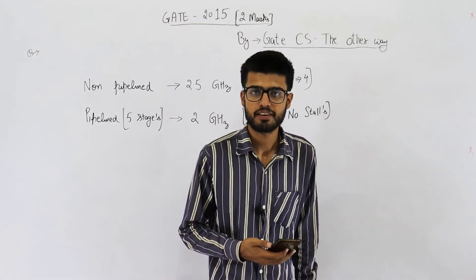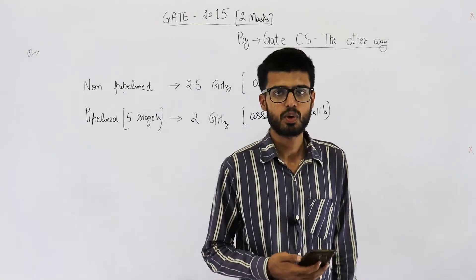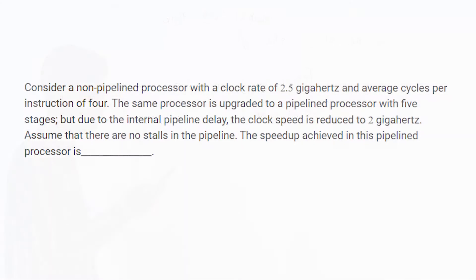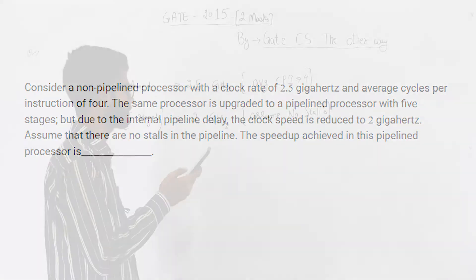This question was asked in GATE 2015 exam, set 1. Let's read out the statement. Consider a non-pipelined processor with a clock rate of 2.5 GHz and average cycles per instruction of 4. The same processor is upgraded to a pipelined processor with 5 stages, but due to internal pipeline delay, the clock speed is reduced to 2 GHz. Assume that there are no stalls in the pipeline. The speedup achieved in this pipelined processor is.